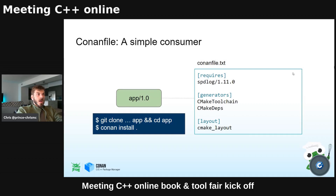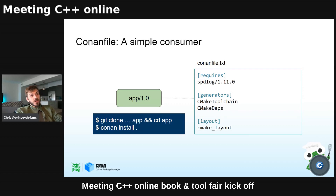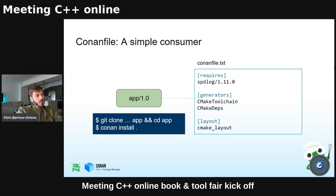Let's say we just have a simple consumer example. I want to make an app and it's going to be version 1.0. You can just make a conanfile.txt — you don't really need to get into Python, it's a very easy syntax. Requires spdlog 1.11.0. We're going to be using some generators — that's Conan's language for build system integrations. We'll use CMakeToolchain and CMakeDeps. We can just git clone our app, cd into the repository, and do a conan install. That's the easiest way to get going.